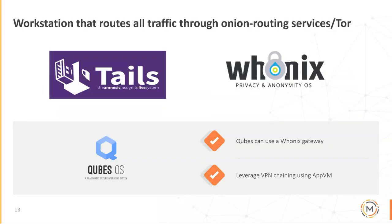Three operating systems leverage Tor. First is Tails — an amnesic operating system on a live bootable USB. You plug it into your device, all traffic is routed through Tor, and when you're done it's non-persistent: once you unplug Tails, the data is wiped. Whonix is another OS that leverages Tor — same thing, all traffic routed through there. Qubes is another OS that virtualizes different cells for different operations; you can use a Whonix gateway to route all traffic through Tor, and also leverage AppVMs for VPN chaining or nested VPNs.